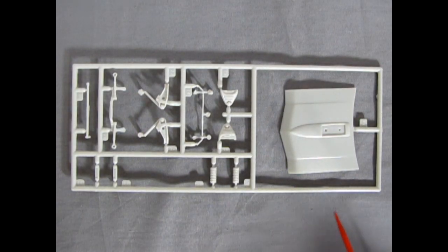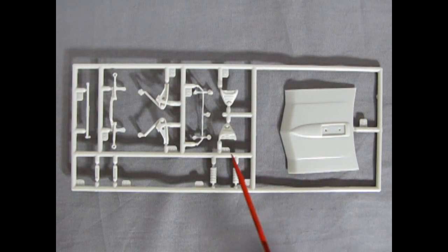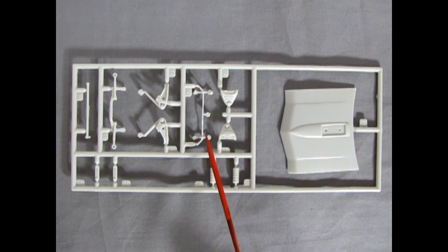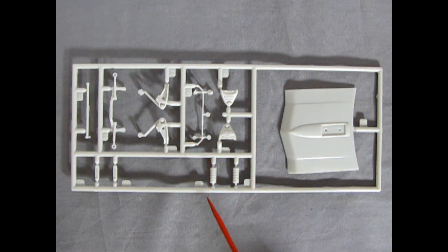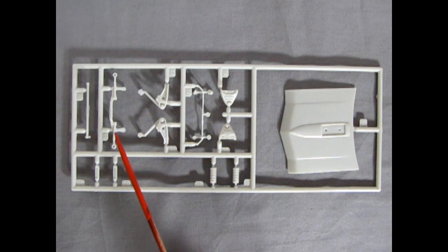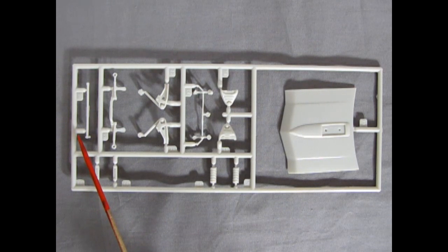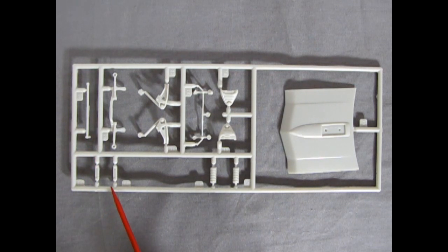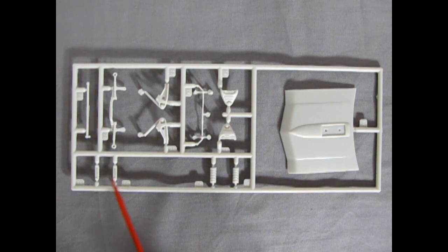For our first parts tree, we have the hood, the upper A arms, the front anti-sway bar, the coil springs, the lower A arms, the steering linkage, the rear anti-sway bar. And here we have the upper control arms for the rear axle.